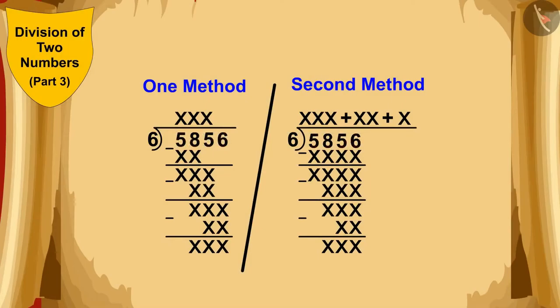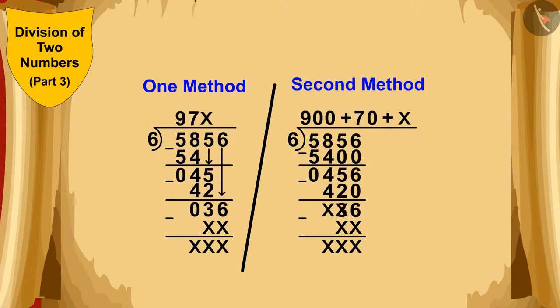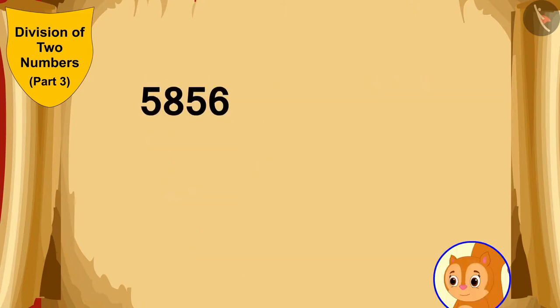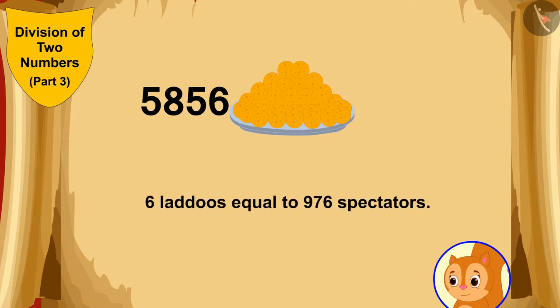We can find a solution to this question by these two procedures. Chanda will be able to distribute 5,856 laddus in a group of 6 laddus equal to 976 spectators. Therefore, Chanda has plenty of laddus for all the viewers.